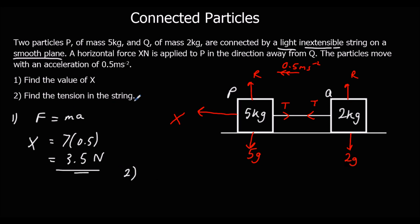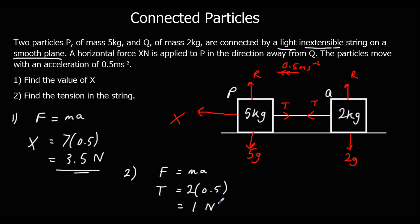Question two: find the tension in the string. We just look at Q. Q is also moving with an acceleration of 0.5 metres per second squared. For Q, F equals ma, and the only force acting on Q is tension. So tension equals 2 times 0.5, giving tension equals 1 newton. We could also have found this by looking at P: 3.5 minus T equals 5a, giving the same answer.